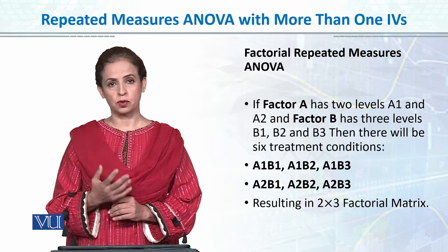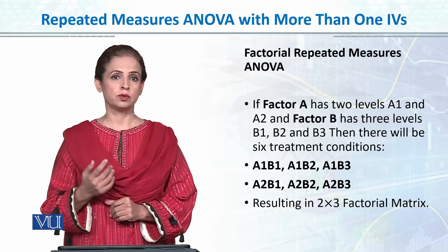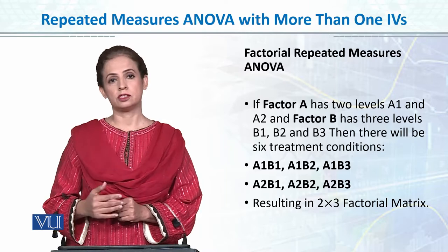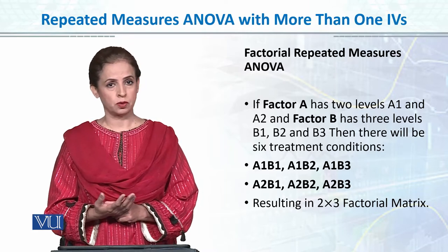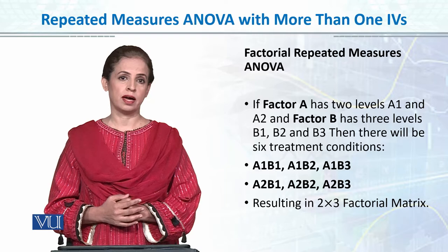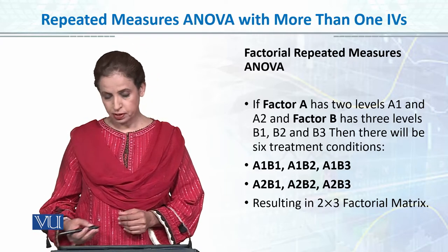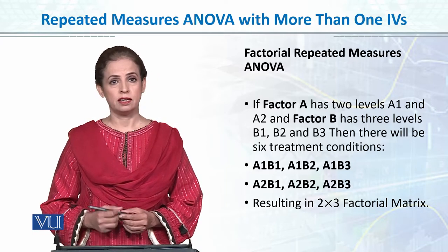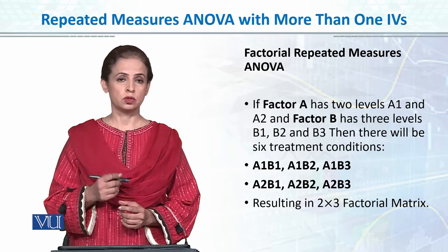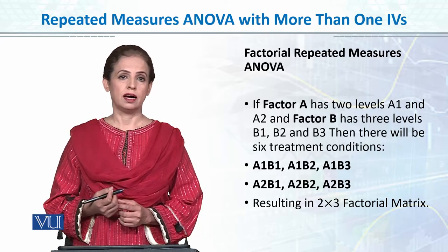As we discussed in factorial ANOVA, if it is a 2×2 design, we have four possible conditions. If we have a 2×3 factorial ANOVA, it means the first independent variable has two levels and the second independent variable has three levels — so two times three means there will be six possible conditions.